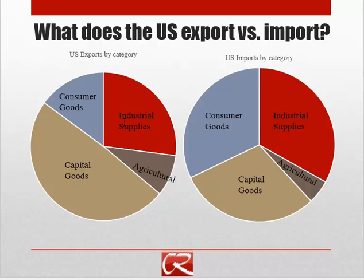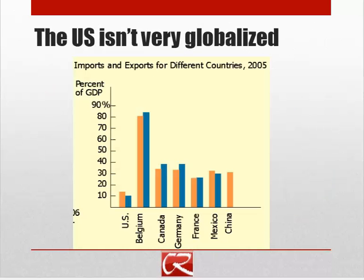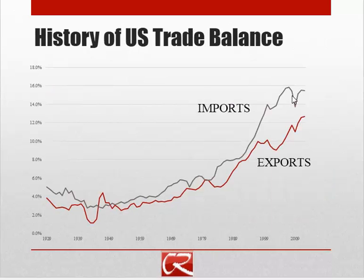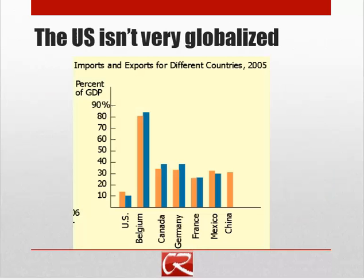For example, we might import crude oil and then export refined petroleum products. On the other hand, what we import is mainly consumer goods, crude oil, and other raw materials. In the global scheme of things, although the U.S. has become more globalized — because imports and exports are both growing relative to GDP — in a global context, the U.S. isn't very globalized. We often look at imports and exports relative to GDP for different countries.